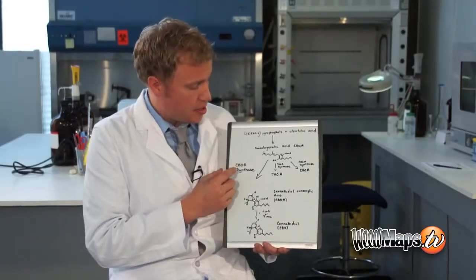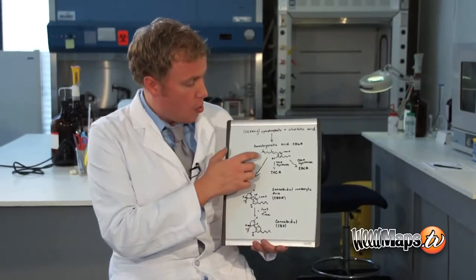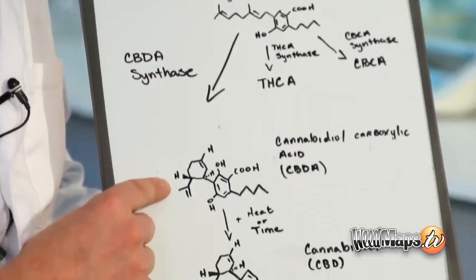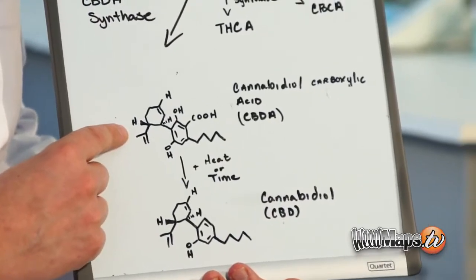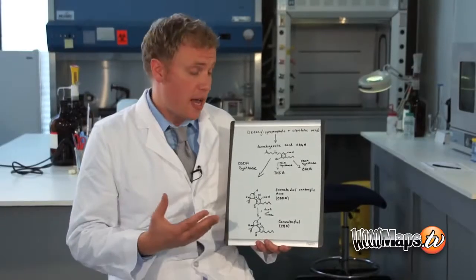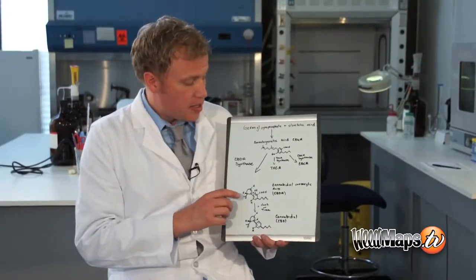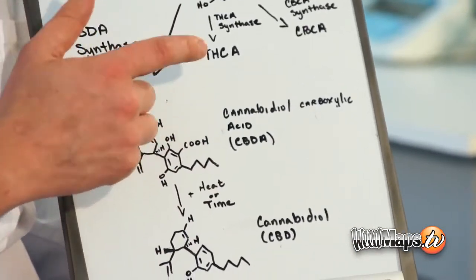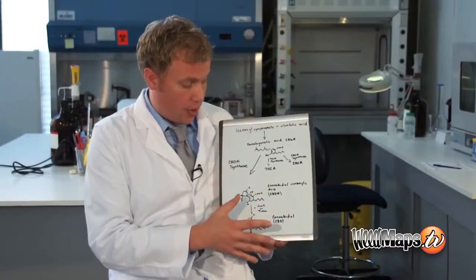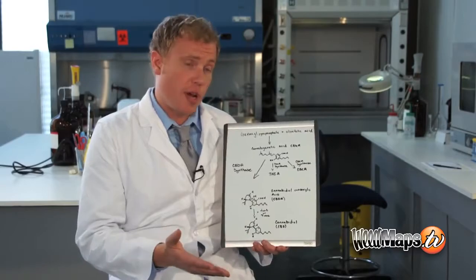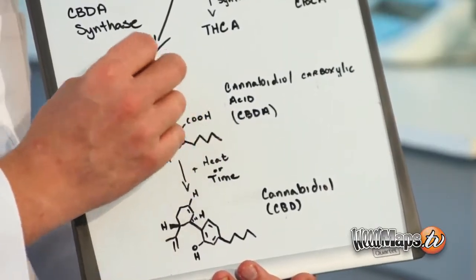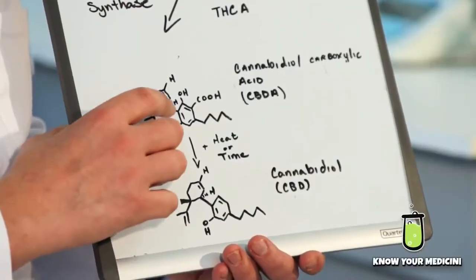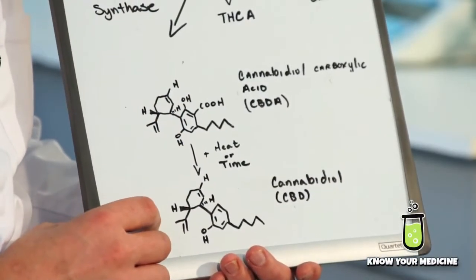So CBDA synthase, if it's found in large enough amounts, will take this cannabigerolic acid and make it into cannabidiol carboxylic acid, which is CBDA. CBDA is CBD with a carboxylic acid attached to it. With heat or through time, this carboxylic acid will naturally release from the compound, as it is very unstable, and become CBD.